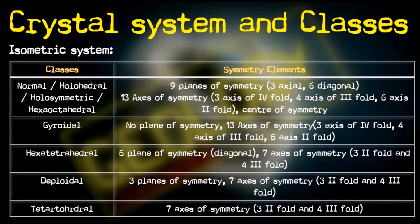Then there is the diploidal class, where the plane of symmetry comes down to three, and it still maintains seven axes of symmetry — three twofold and four threefold. The last class of the isometric system is the tetrahedral class, which also has seven axes of symmetry: three twofold and four threefold. So the minimum number of symmetry elements in any isometric class is seven axes of symmetry.